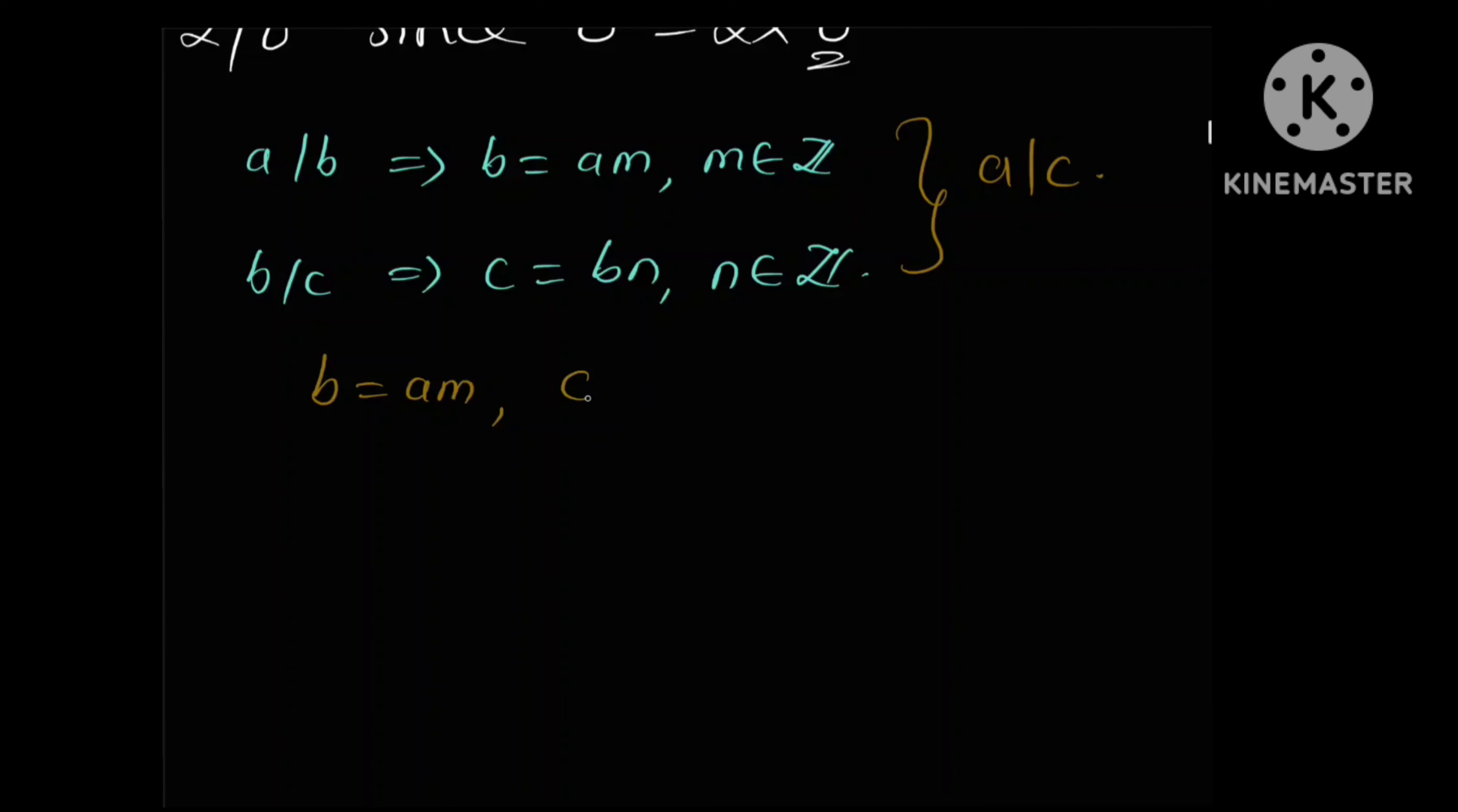And in the second equation, we have C to be equal to BN. And if you substitute B to be equal to AM in the second equation, we are going to have C to be equal to AM, all this multiplied by N.